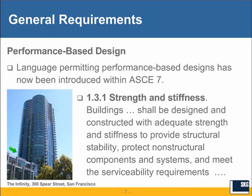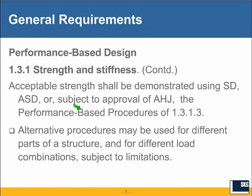Section 1.3.1 states that buildings shall be designed and constructed with adequate strength and stiffness — really a foundational statement. It then says that acceptable strength and stiffness shall be demonstrated by using strength design, allowable stress design, or — subject to the approval of the authority having jurisdiction — the performance-based procedures of Section 1.3.1.3. This is all new in ASCE 7-10. The section also states that you can use alternative procedures for different parts of the structure, meaning performance-based design for one portion and strength design for another.